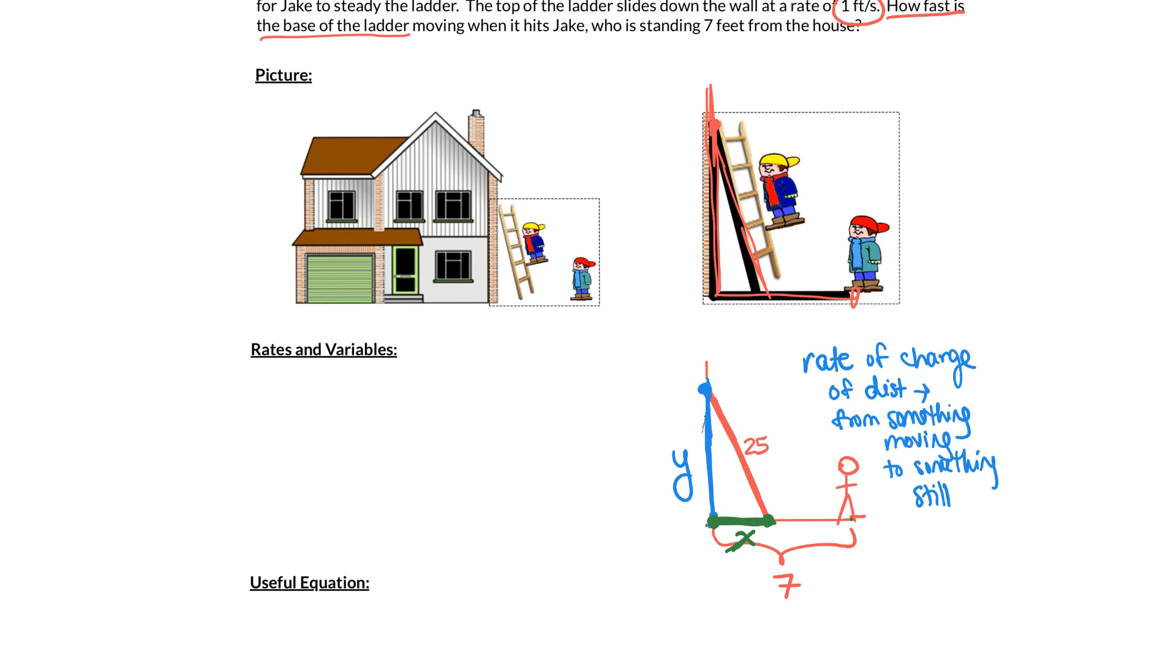So we have a picture. We have the things labeled that we probably are going to need. And now we need to know what our rates are. So let's define here rates and variables. So the rate they gave us was one foot per second. So what is changing at one foot per second? We kind of said this already. It's y, right?